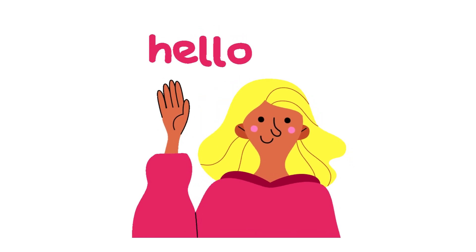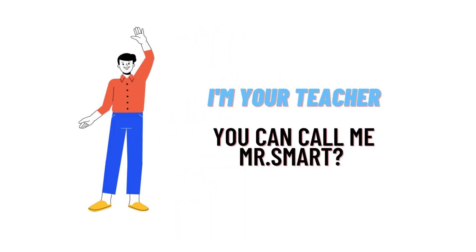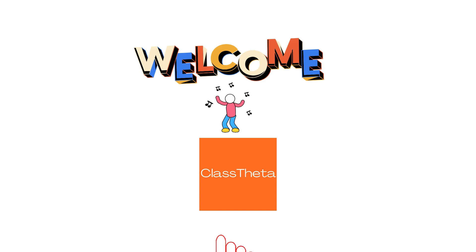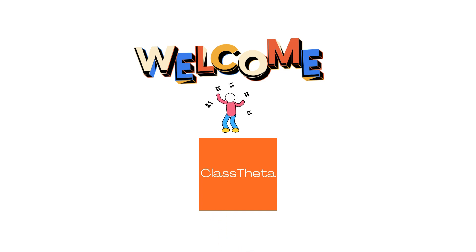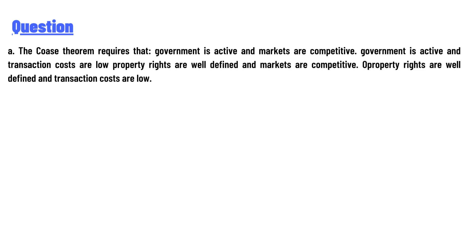Hello everyone, I am Akrash, your teacher. I welcome you to class twitter.com. Our today's question is: the Coase theorem requires that government is active and markets are competitive.